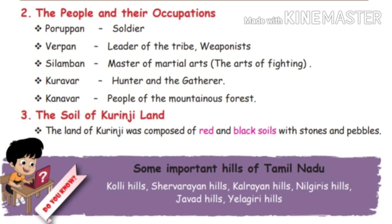Apart from the theme, let us see the people and occupations of Kurunji land. The first is poorpan — he is a soldier. The second is verpan — the leader of the tribe and a weaponist. The third is silamban — master of martial arts, the art of fighting.